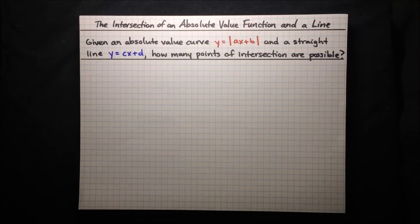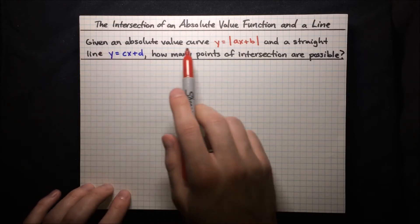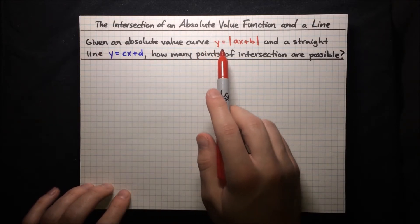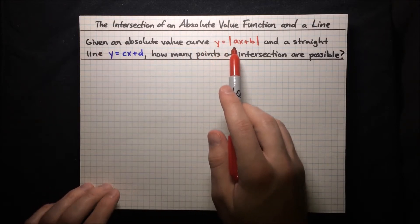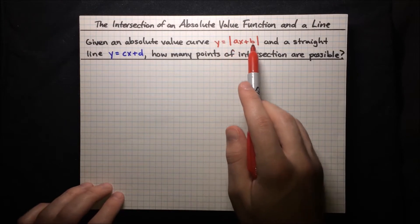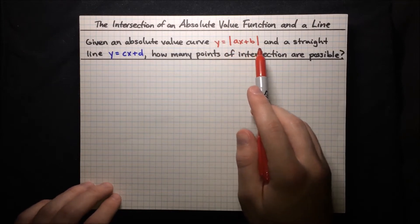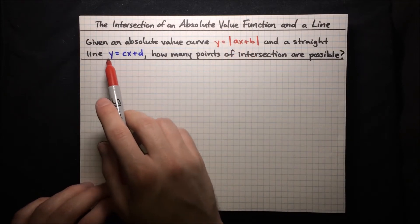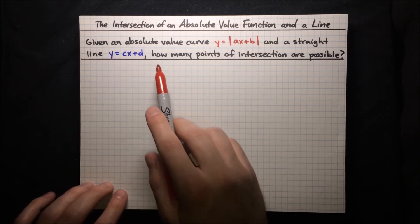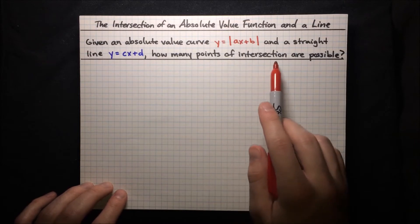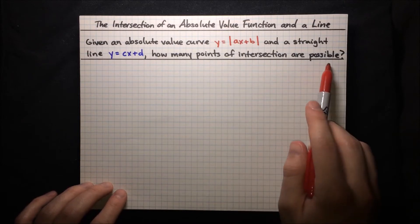In this video, we're going to talk about the intersection of an absolute value function and a line. So first question is, given an absolute value curve y equals absolute value of ax plus b, and a straight line y equals cx plus d, how many points of intersection are possible?